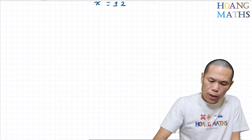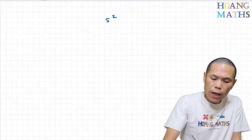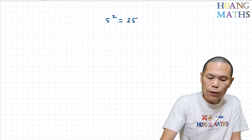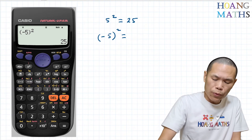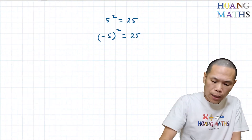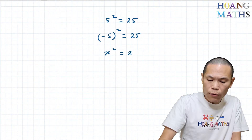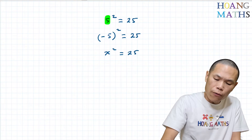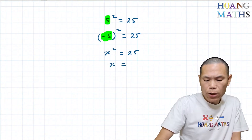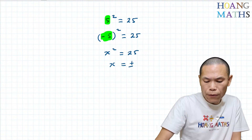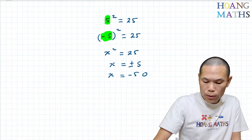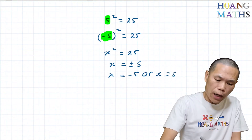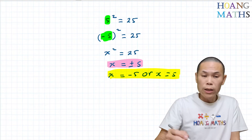Let's go to another one. If we have 5 squared: 5 squared is 5 times 5, that gives me 25. And if we have negative 5 all squared, you should get 25 as well. So this means that if x squared is equal to 25, then x is either equal to positive or negative 5. You can write it either way.